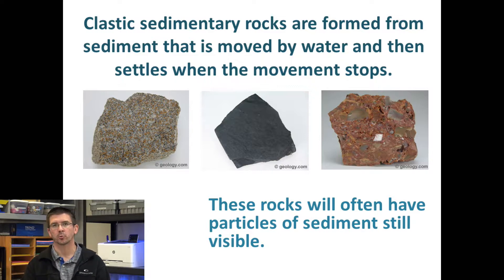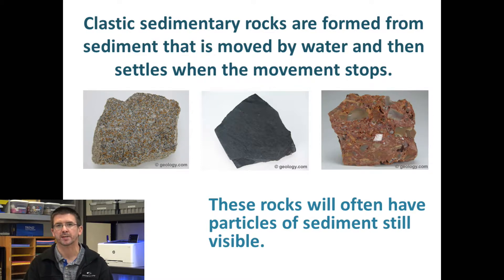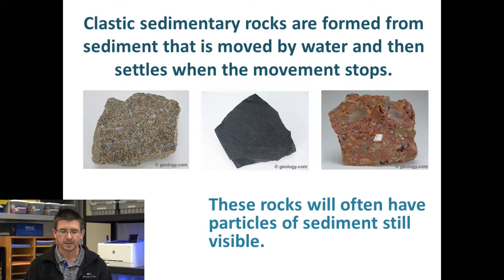For instance, if water washes some particles of soil and small rocks into a lake, those things might settle on the lake bottom. Then after time, when the lake dries up, these could pack together, harden, and solidify to form a clastic sedimentary rock. Examples of clastic sedimentary rocks include things like sandstone and conglomerate — things where particles pack together and harden over time.